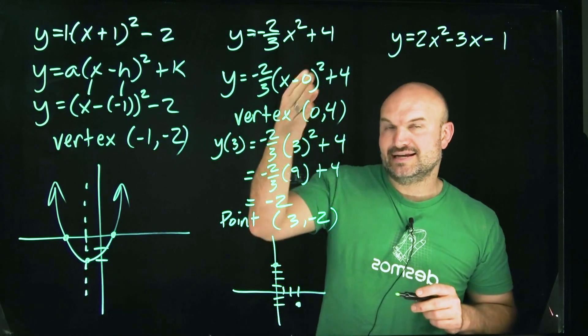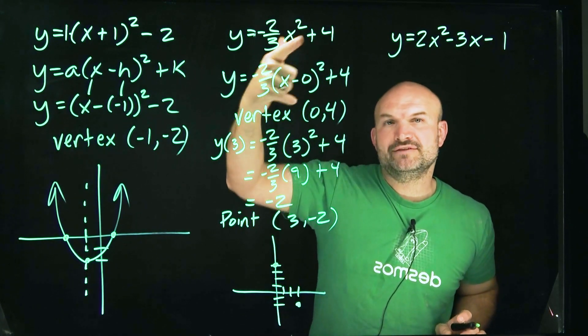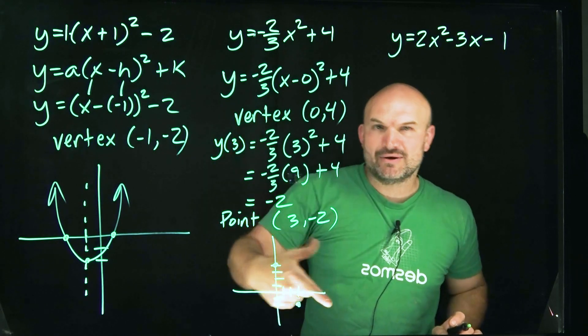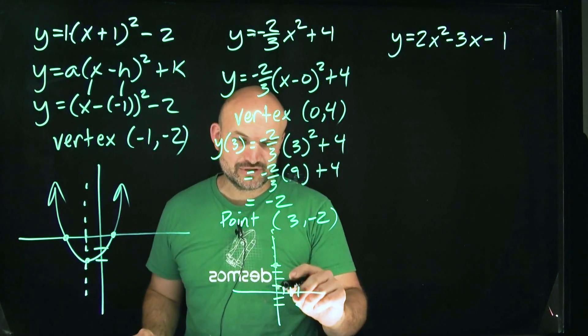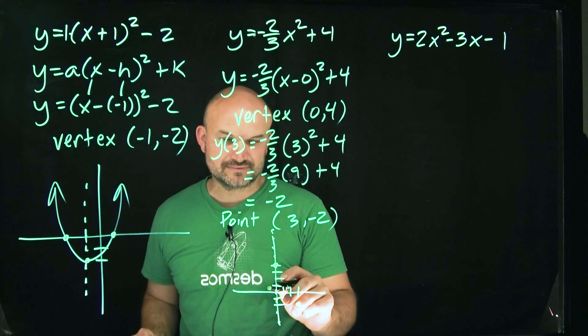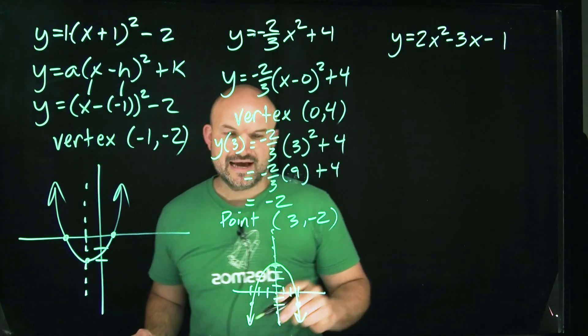Well, here's the cool thing. I plugged in three and I got negative two. What would happen if I plugged in negative three? Well, a negative three squared would still give me nine. So I also have that point as well. That's where that axis of symmetry, because the axis of symmetry in this case is going to be the y-axis.